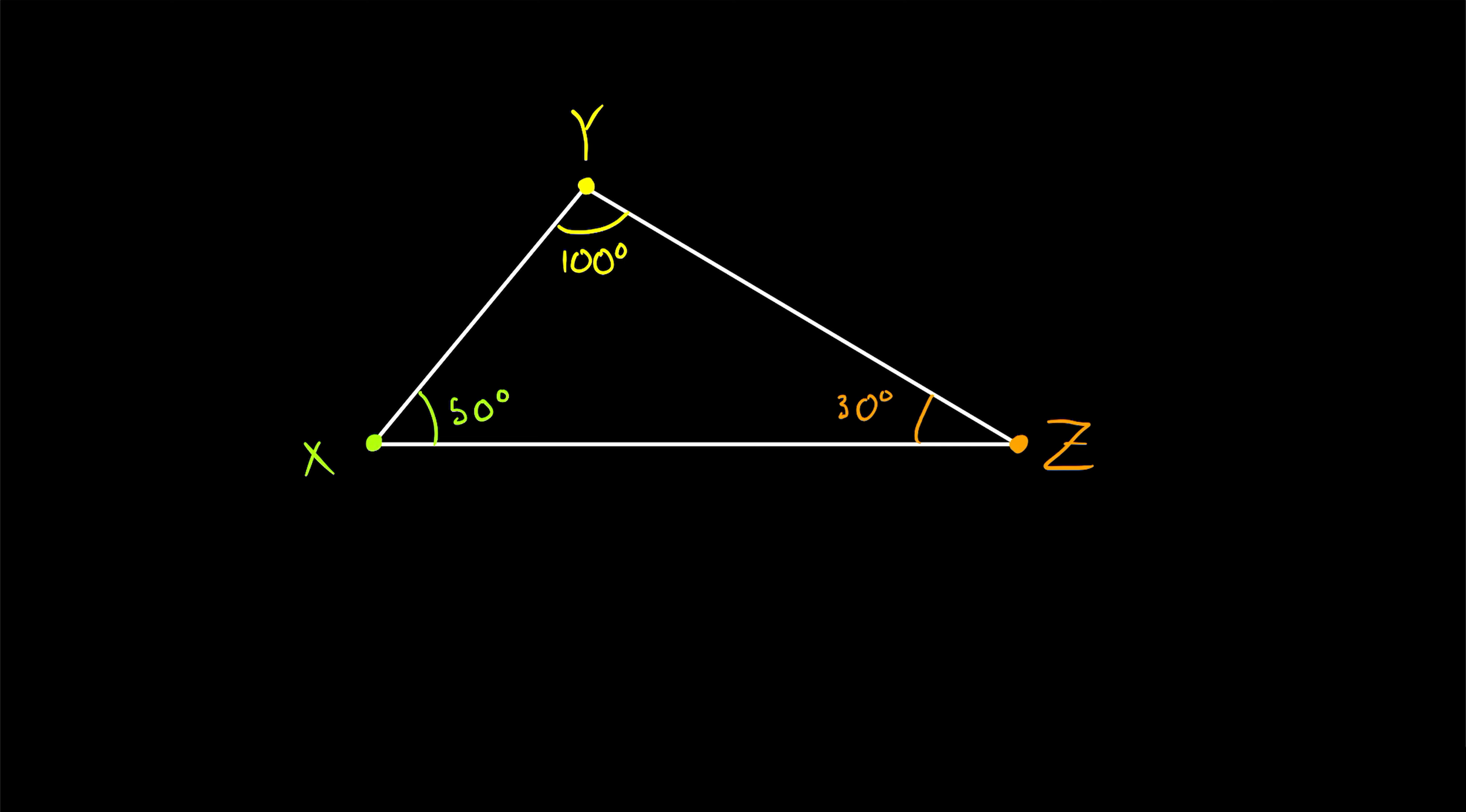I'll do two now, just to get you started. We could call the 100 degree angle angle Y. That's using the single letter notation. Remember that using the single letter notation is not always a good idea, but it works with this triangle because each point is the vertex of only one angle. So it's clear what angle we're talking about.